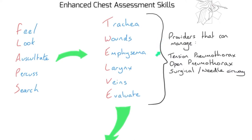This is aimed at providers that can manage tension pneumothorax and open pneumothorax, or perform a surgical or needle cricothyroidotomy. The aim of this assessment is to find or predict the sort of pathology that would require these interventions. If you can't carry out these interventions, there's still value in understanding them so you know why you're referring this patient to the next level of care.